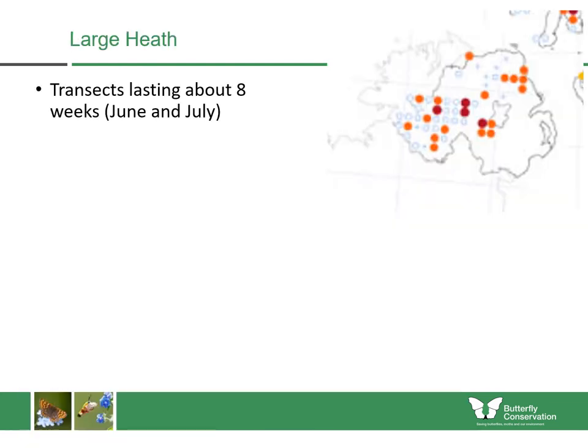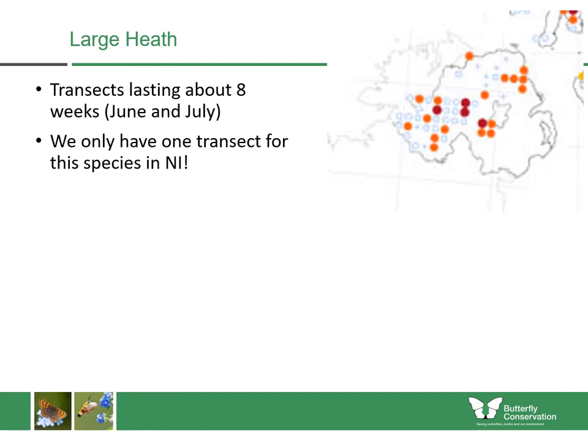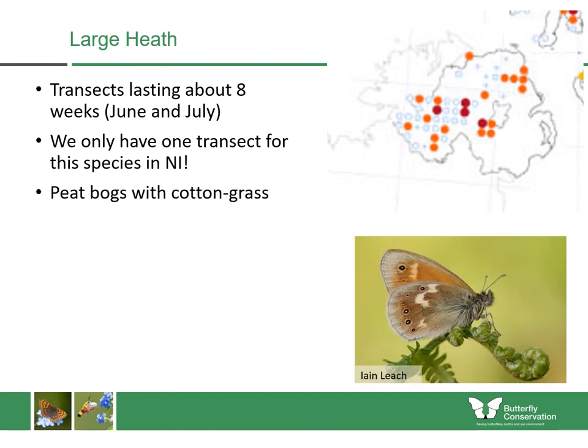For the Large Heath, we have a transect that runs for about eight weeks in June and July, but we only have one transect for the species in Northern Ireland, so we know very little about what its populations are doing here. Its populations are quite well distributed in the west and north, so if you live near any of those areas we'd love to get you involved in Large Heath monitoring. These are found on peat bogs with cotton grass.